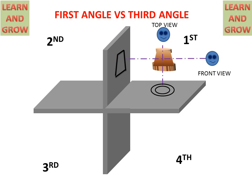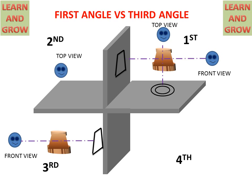In third angle projection, there is the observer and this is the object. When the front view is drawn it will be like this, but in the top view the projection plane will be in between the object and the observer. This is called third angle projection, and the top view will be made on the horizontal plane. So in third angle projection, the top view will be on the upper side and the front view will be on the below side of the top view. This is the difference between first angle and third angle projection.